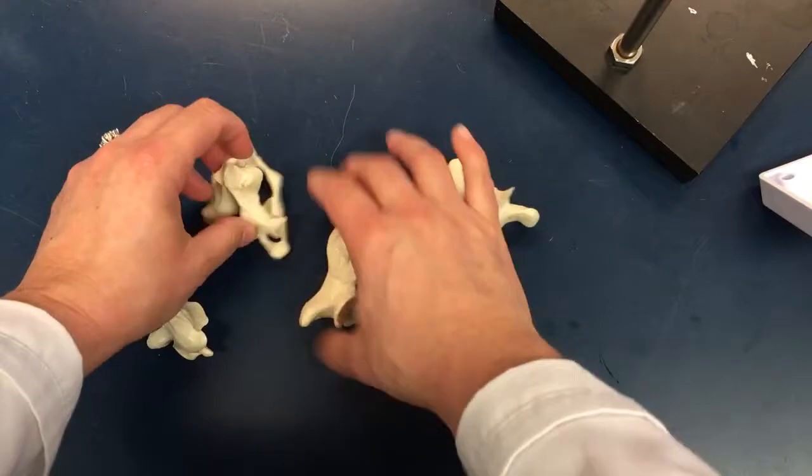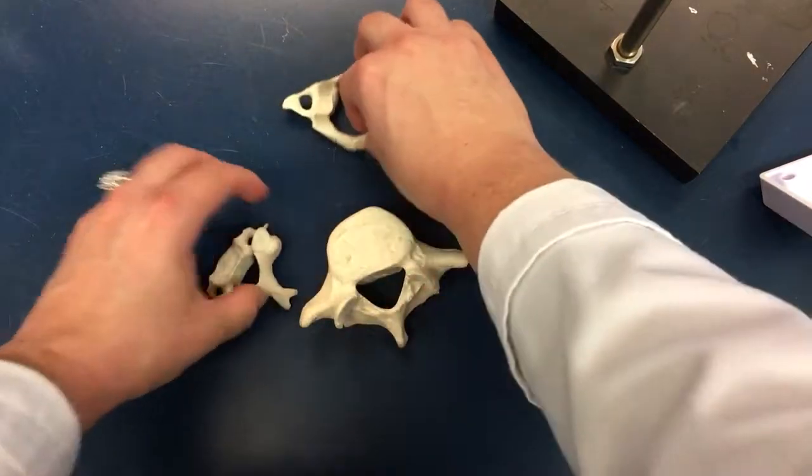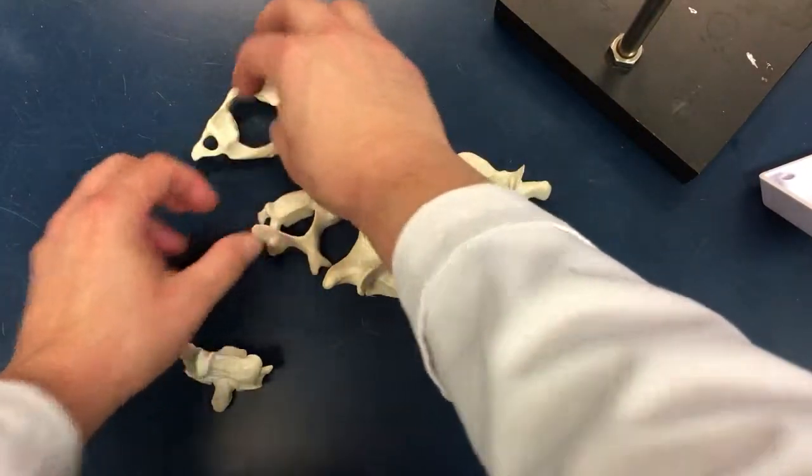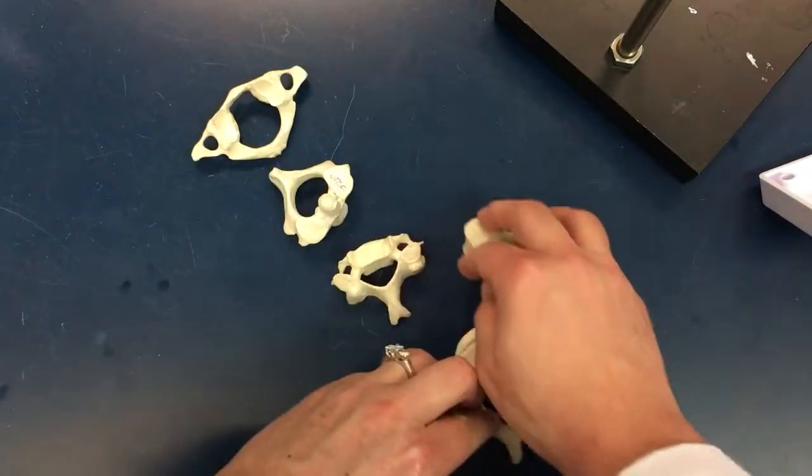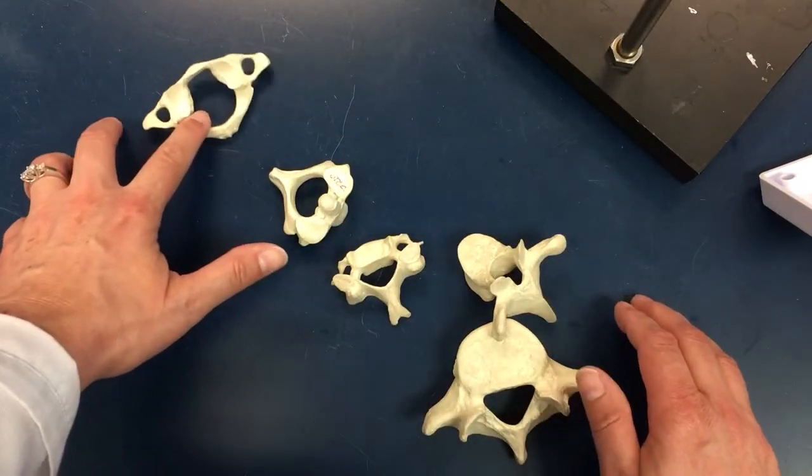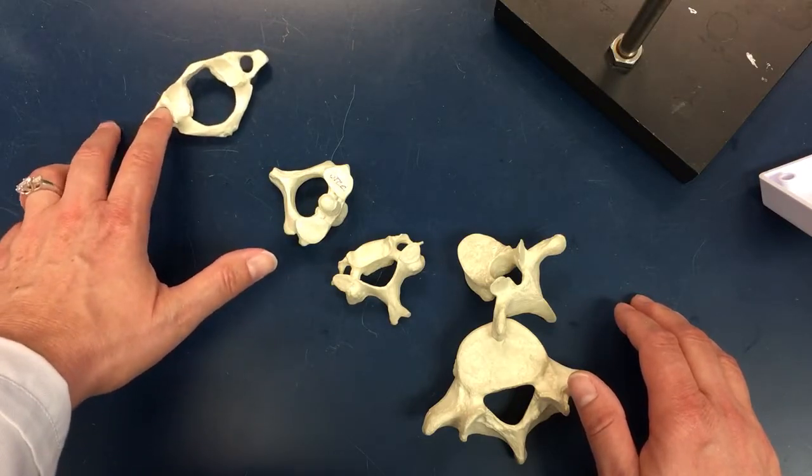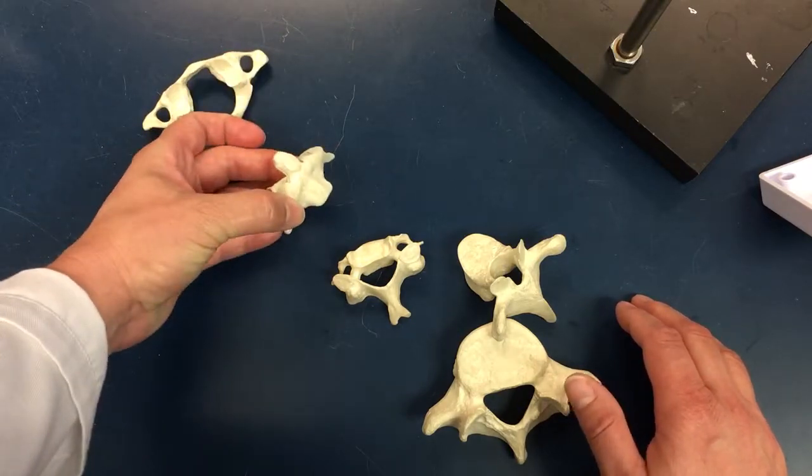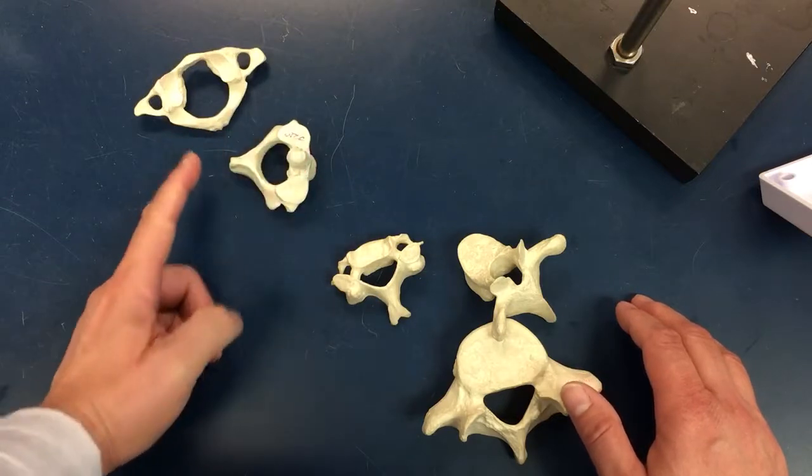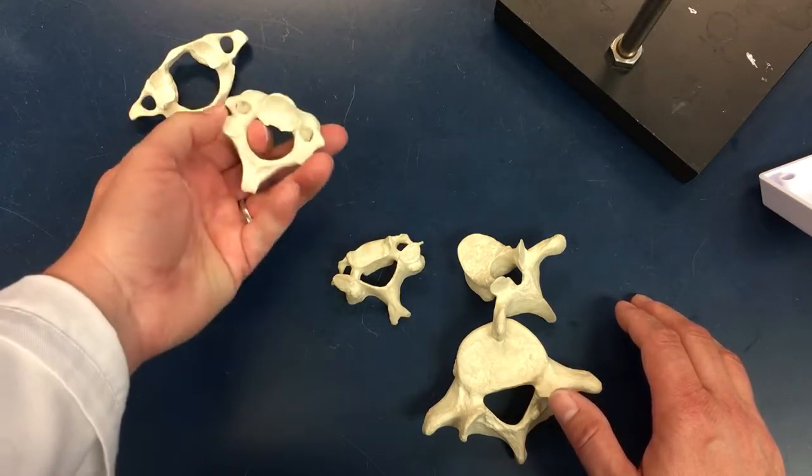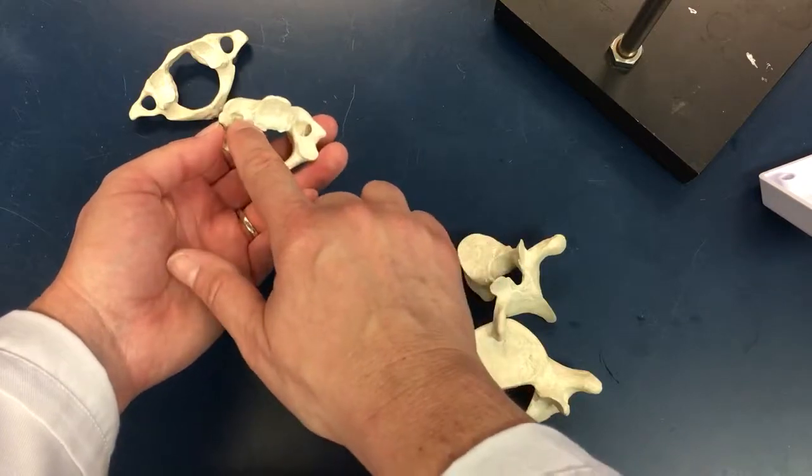Just to compare all of them together, starting at the top you have the C1 atlas with occipital facets and transverse foramen. You have the C2 axis. The dens has a spinous process, and it also has those transverse foramen.